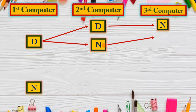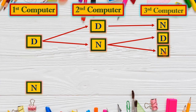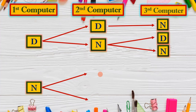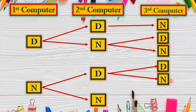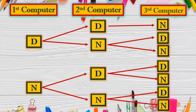Given the second computer is N, the third one could be either defective or non-defective. Now on the first computer, if we choose N, there are two possibilities on the second computer: D or N. If we choose D on the second, the third could be D or N. If we choose N on the second, the third could also be D or N. This gives us seven possible outcomes in total.